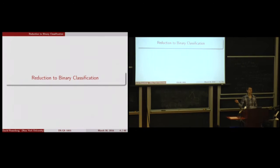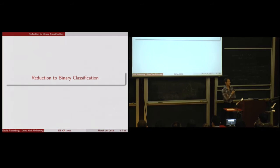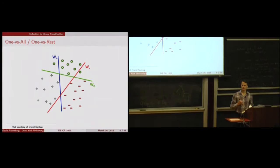It's called a reduction, where you take a problem of one sort and manage to solve it using a solution to another, usually simpler problem you already have. Suppose we have a binary classifier — how can we use that to solve multi-class? This may be something you've seen before: one versus all, one versus rest.